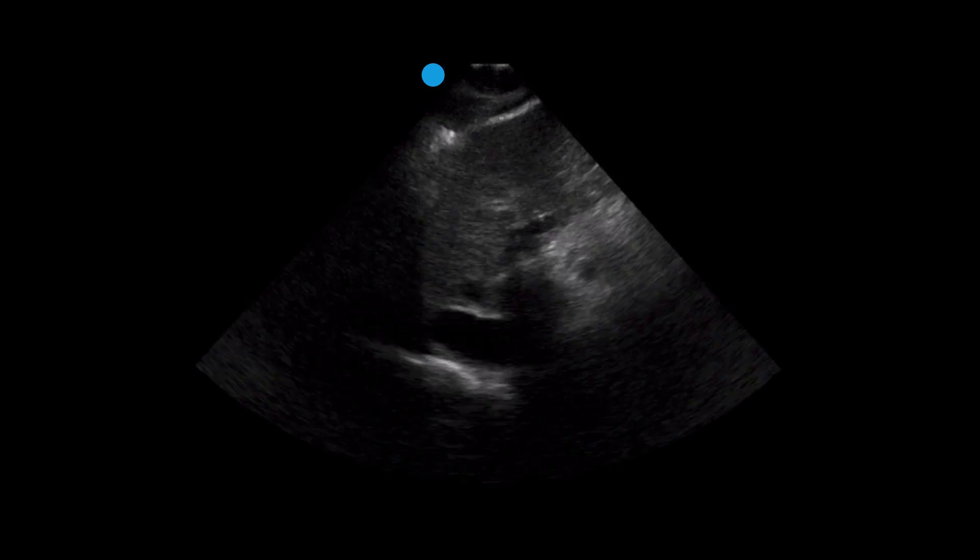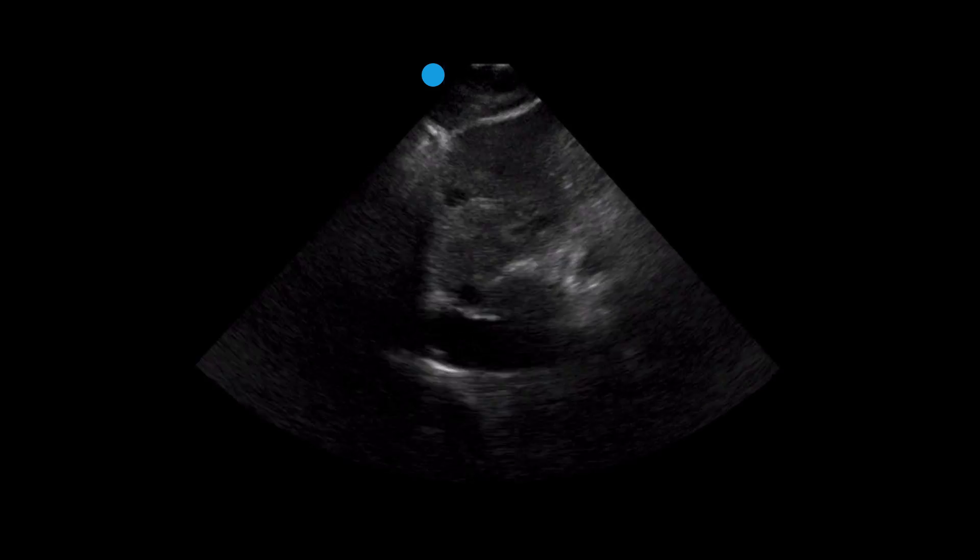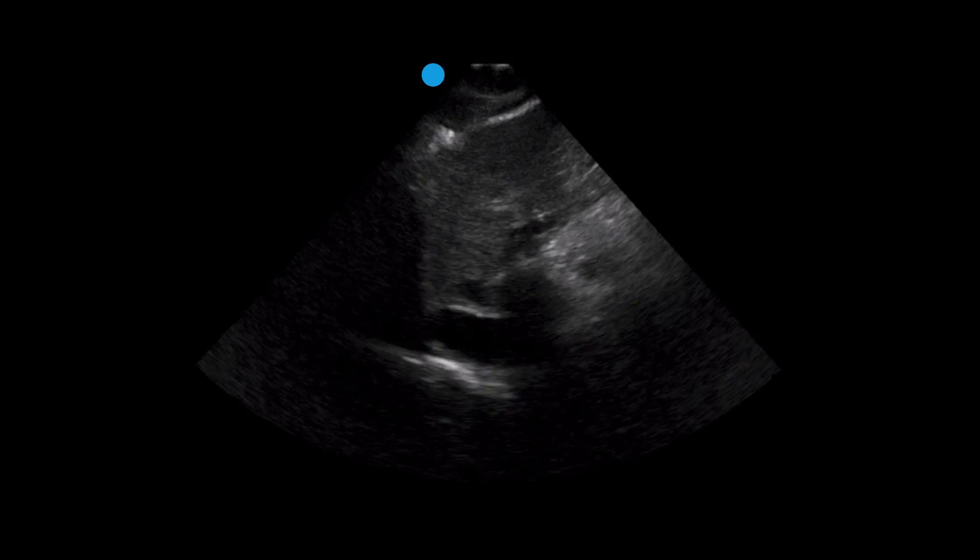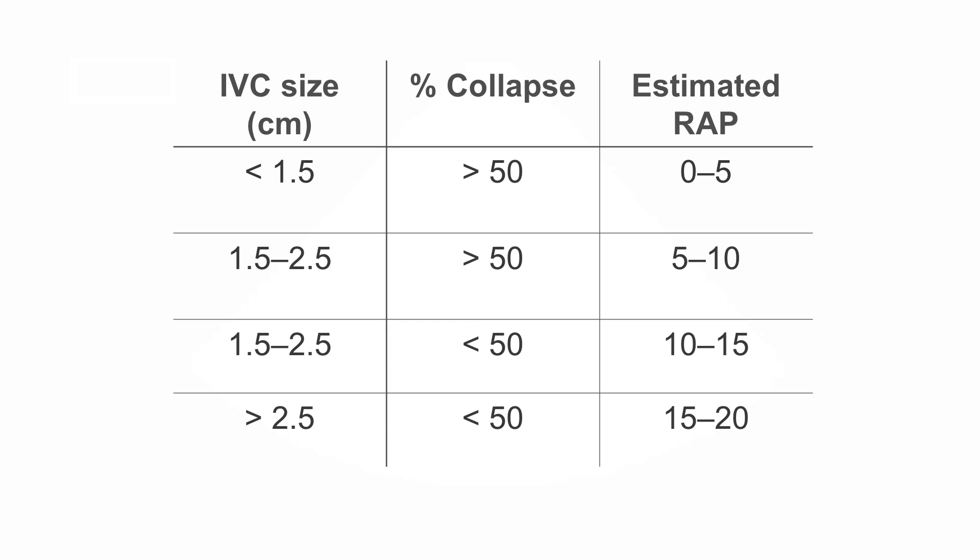We'll obtain an image of the patient's IVC. In this case, we can see that it's dilated and it's poorly collapsible. And then we'll freeze the image and obtain a measurement. It measures 2.18 centimeters. We can see then that this patient had poor collapse and an IVC of 2.18 centimeters, which puts the estimated right atrial pressure at 10 to 15 millimeters of mercury.